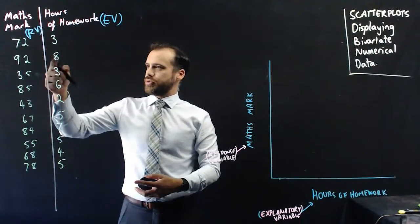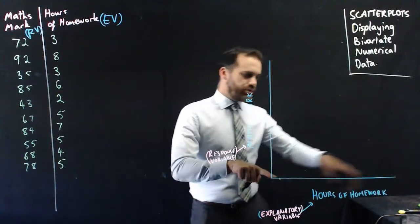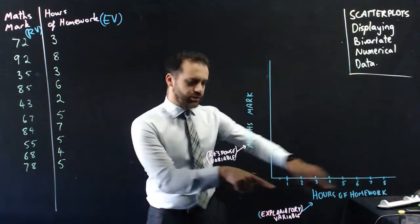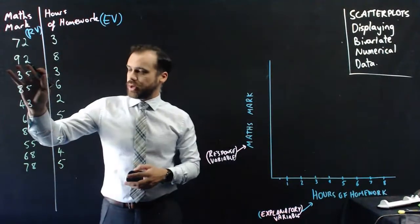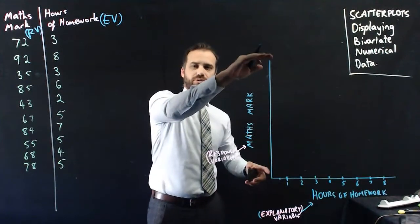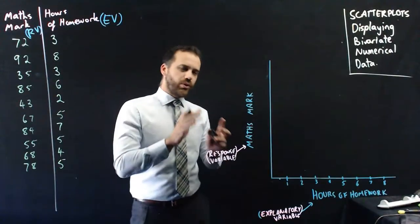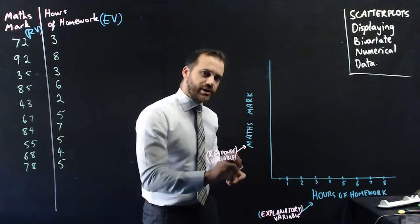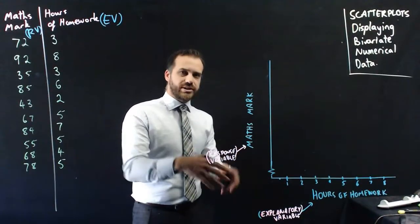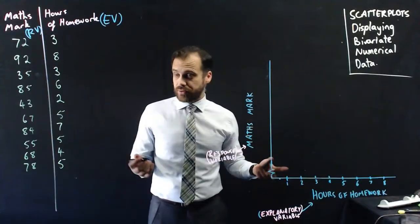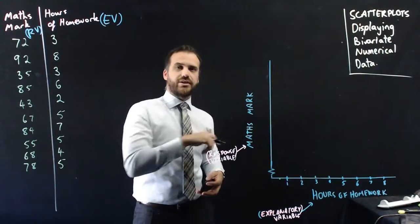Now, the largest number of homework here is 8, so I'm going to split this from 0 to 8 here. 1, 2, 3, 4, 5, 6, 7, 8. And now I'm going to look at the maths mark. It goes all the way up to 92, so I'm going to go all the way up to 100 here, and the lowest maths mark here is 35. So what I might do is do one of these little squiggly lines here. The little squiggly line means that I'm not going to start from 0. I'm going to start from some other number. In this case, I'm going to start from 30 and go 30, 40, 50, 60, 70, 80, 90, 100.